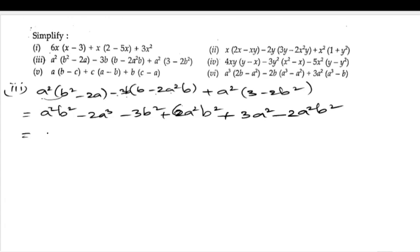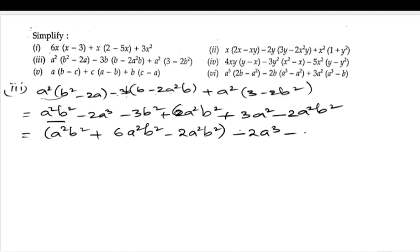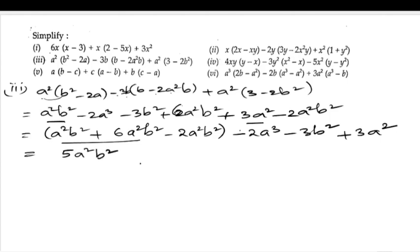Now let us write the a²b² terms together: a²b² plus 6a²b² minus 2a²b². Then we have minus 2a³, minus b², and 3a². So a²b² plus 6a²b² is 7a²b², and 7a²b² minus 2a²b² is 5a²b². The answer for the third bit is 5a²b² minus 2a³ minus 3b² plus 3a².